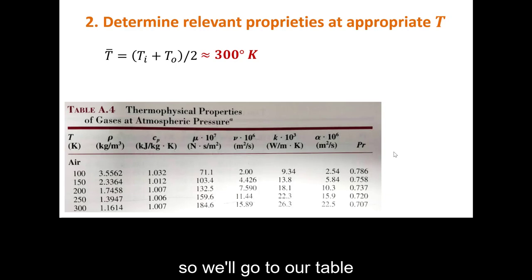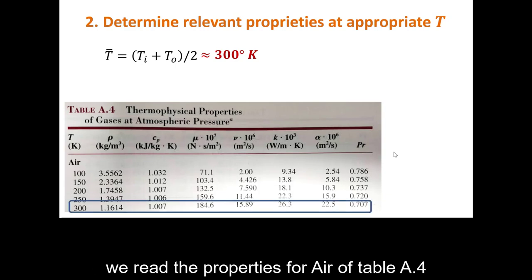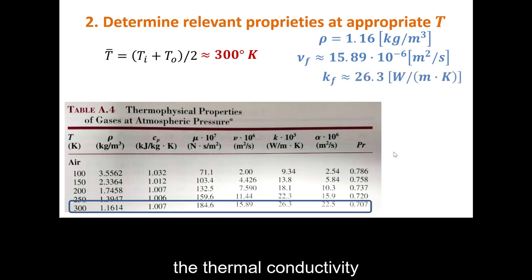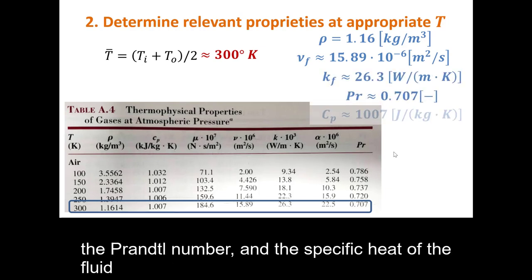So, we'll go to our table. We've assumed that the temperature is 300 Kelvin. We read the properties for air off table A.4. We find the density, the viscosity, the thermal conductivity, the Prandtl number, and the specific heat of the fluid.